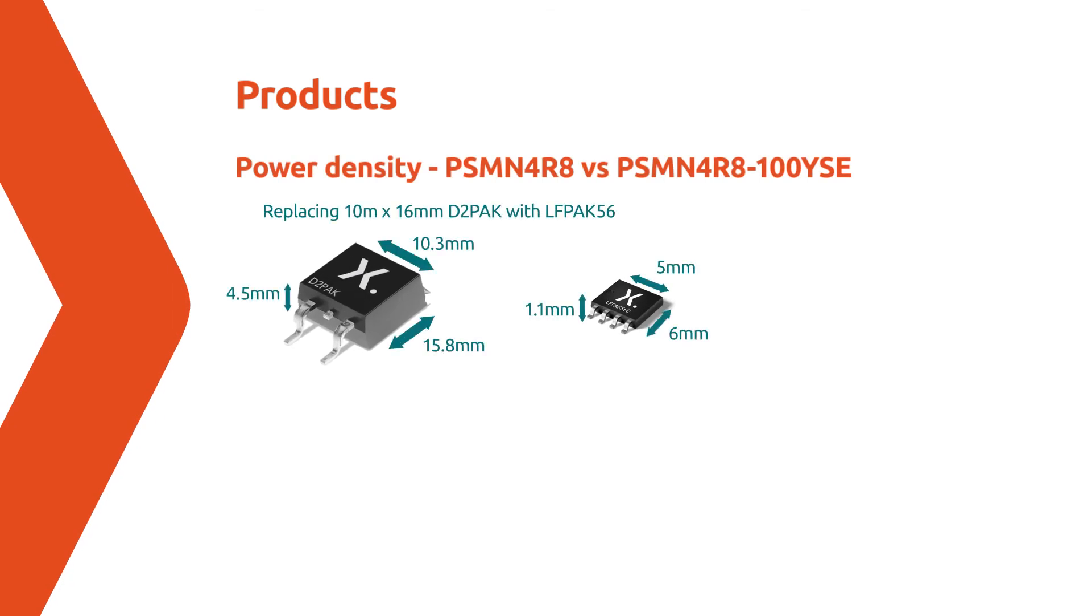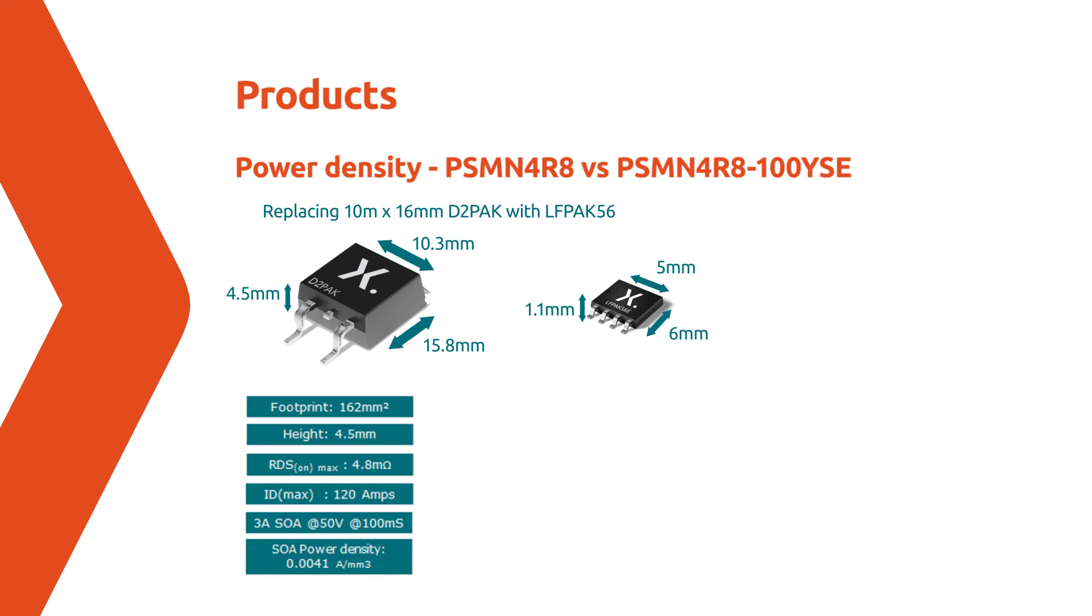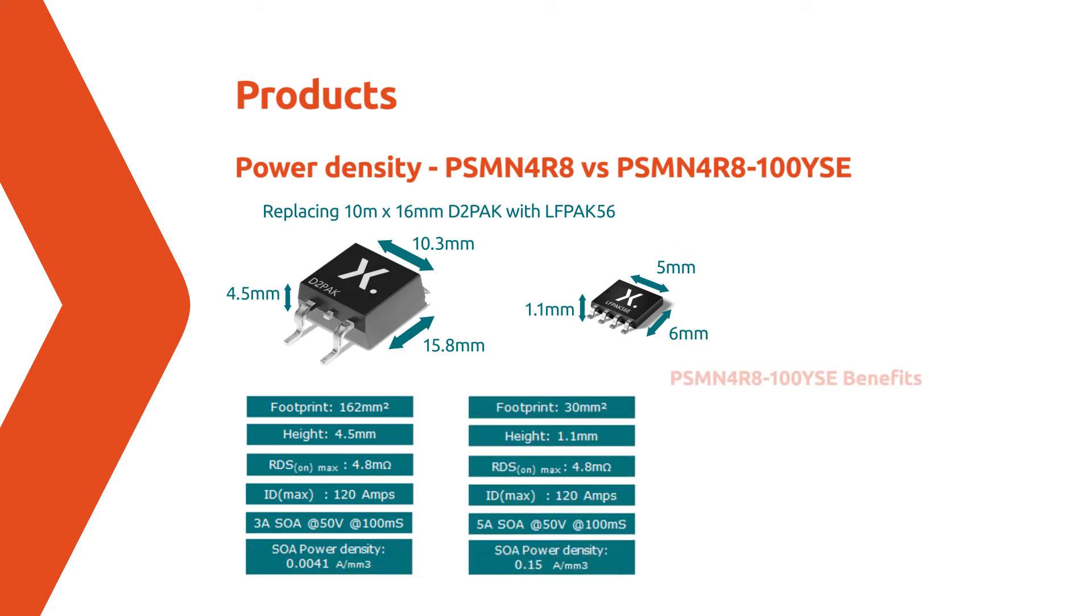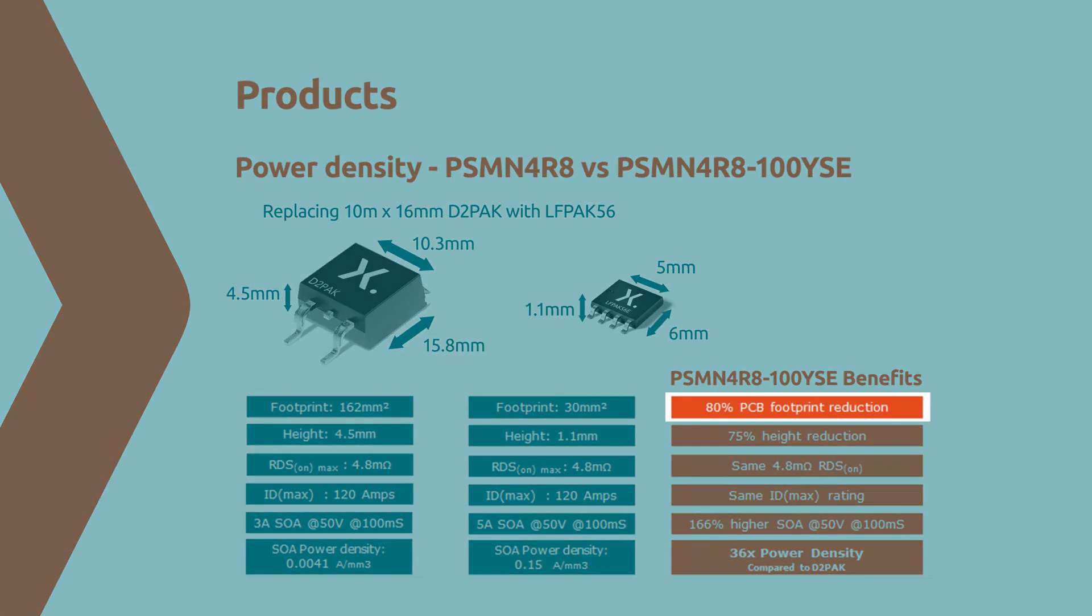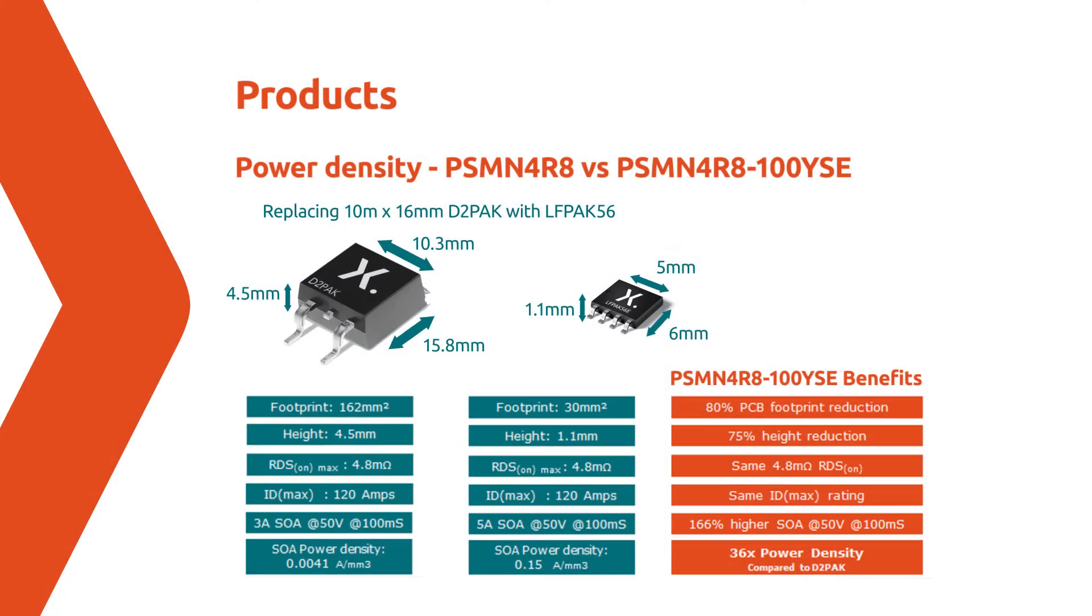The demo shows the comparison of our leading SOA technologies in both the traditional D2PAK package and our miniaturized LFPAK56E. You can see by advancing both the silicon and package technology, results in improvement across a number of parameters. Starting with the efficiency you can save in PCB space, LFPAK is both 80% smaller in footprint size and has a height reduction of 75%. With RDS-ON and current capabilities comparative across the packages, the real strength by placing our new silicon generation in LFPAK is a massive 166% increase in SOA at 50V, ideal for 48V hot-swap systems.